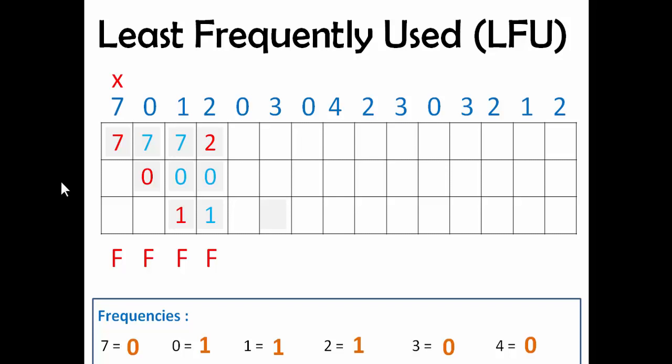The next page is 0, which is already present in the page frame buffer, so 2, 0, and 1 will remain there — this will be a page hit. The page which is requested by the program is present in the RAM, hence it is a page hit. The frequency of 0 will increase, so it will become 2.